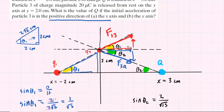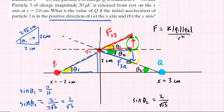So the idea is that we're going to be setting the y-component of F1,3 equal to the y-component of F3Q. Each of those forces obeys Coulomb's Law, which tells us the electrostatic force equals K multiplied by the magnitude of charge 1 times the magnitude of the other charge divided by the distance between them squared. So we are going to be setting the y-components of each force equal to one another.